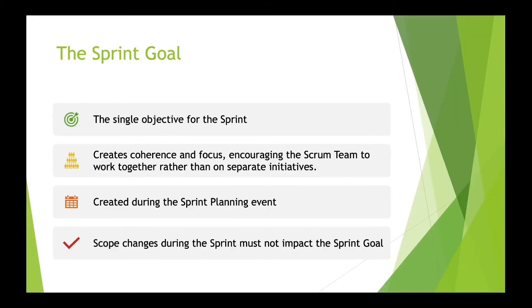Similar to the product goal, the sprint goal provides context to the sprint. It is the single objective for the sprint, created during the sprint planning event and committed to by the team. The intent of the sprint goal is to create coherence and focus for the team as they execute the sprint. If scope changes are injected during the sprint, they must not be accepted if they impact the sprint goal.